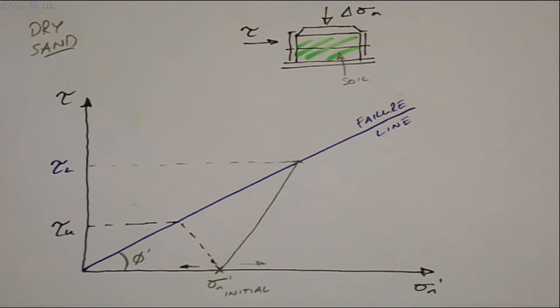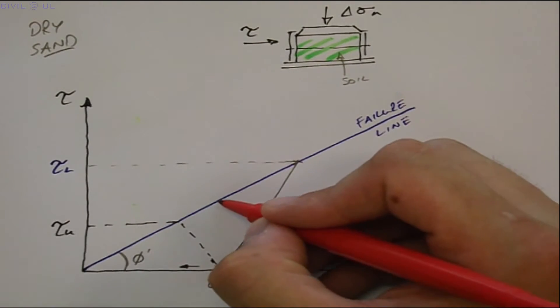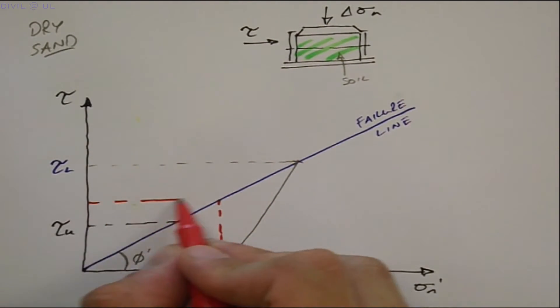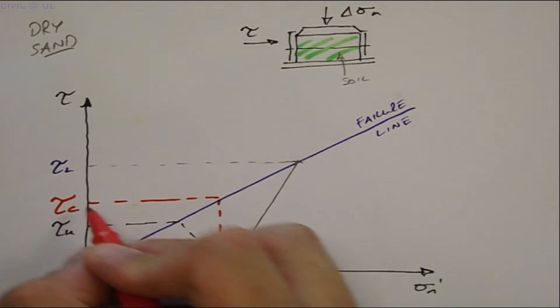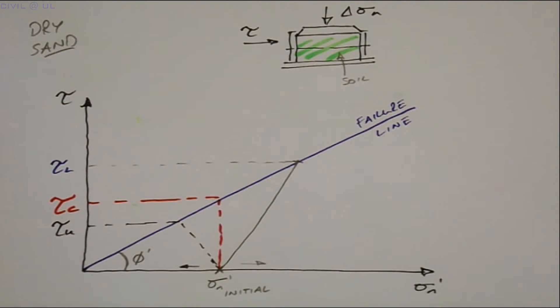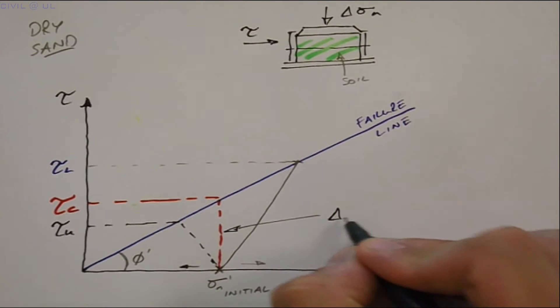Incidentally, conventional direct shear or shear box tests involve keeping the normal stress constant. In such a test, starting again at the same normal effective stress gives us the following stress path and a failure shear strength of tau C. It's worth noting here that our conventional stability analysis assumes a vertical stress path to failure.